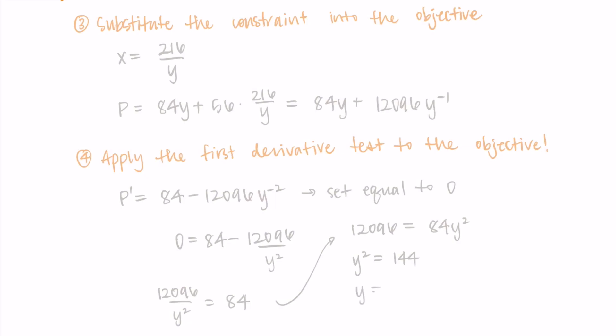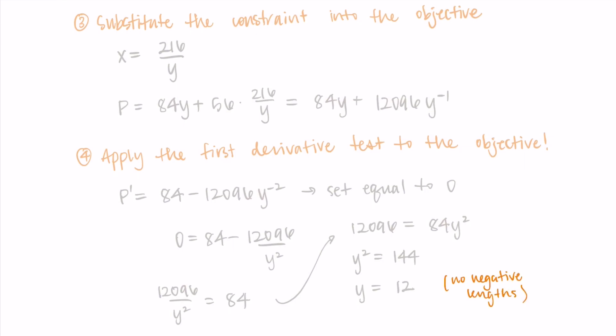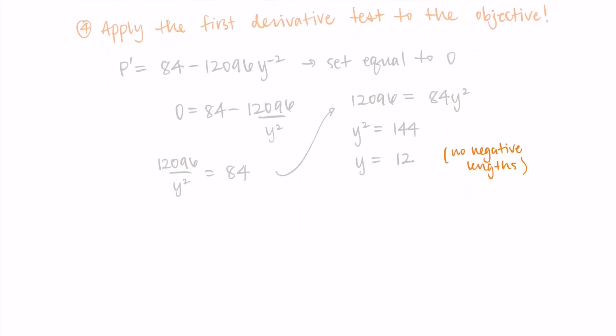So y is equal to 12. And remember, we can't have a negative length on any of the sides, because we need positive lengths for real world dimensions. So y is just positive 12. We don't need to worry about the negative 12 from the square root.